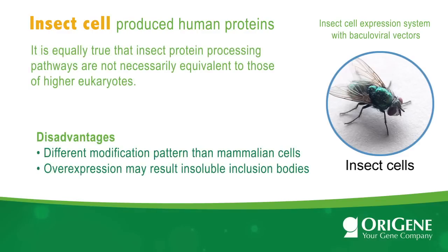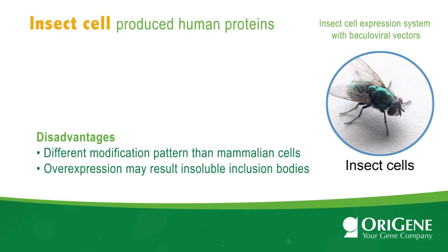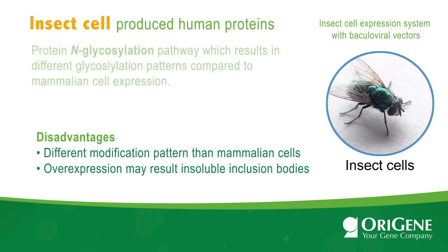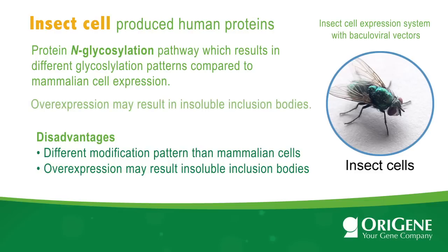However, it is equally true that insect protein processing pathways are not necessarily equivalent to those of higher eukaryotes. One of the best examples is the protein N-glycosylation pathway, which results in different glycosylation patterns compared to mammalian cell expression. In addition, overexpression may result in insoluble inclusion bodies.